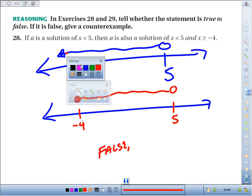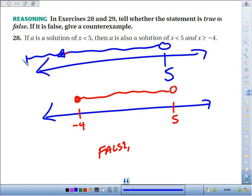Let's take negative 100 for an example. It is less than 5, but is it also a solution to the red? Is it less than 5 and greater than or equal to negative 4?